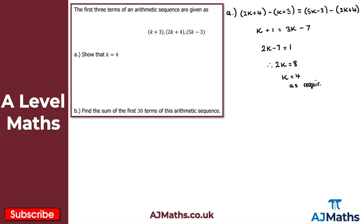Even if you couldn't show that for part A, you can still attempt part B: find the sum of the first 30 terms of this arithmetic sequence. Substituting k equals 4 into the terms: k plus 3 gives 7, 2k plus 4 gives 12, and 5k minus 3 gives 17. So we're increasing by 5 each time — the common difference is 5.